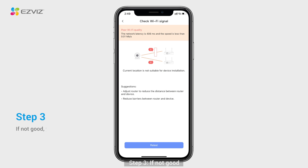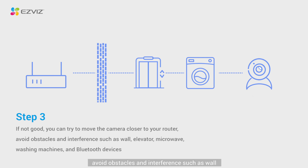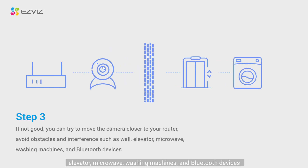Step 3: If the signal is not good, you can try to move the camera closer to your router. Avoid obstacles and interference such as walls, elevators, microwaves, washing machines, and Bluetooth devices.